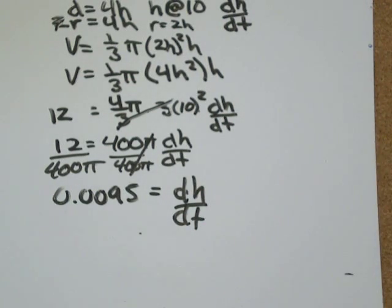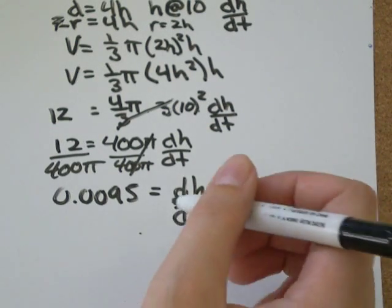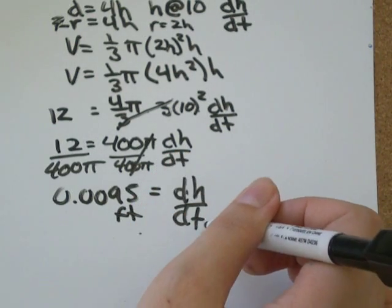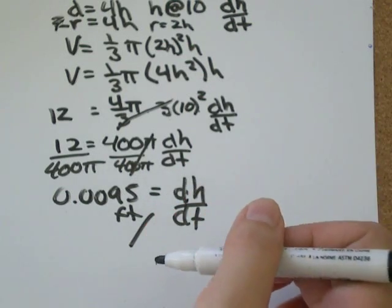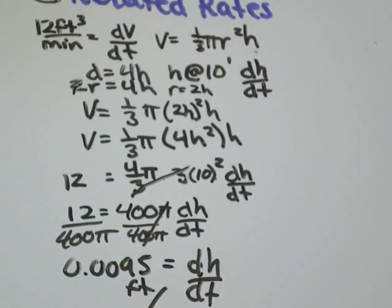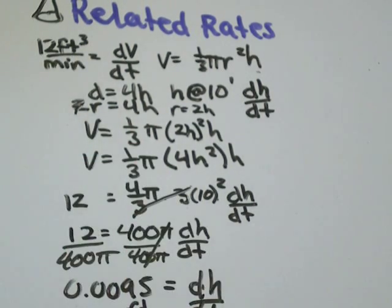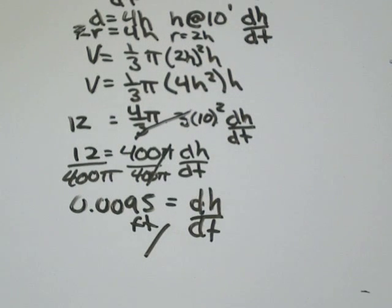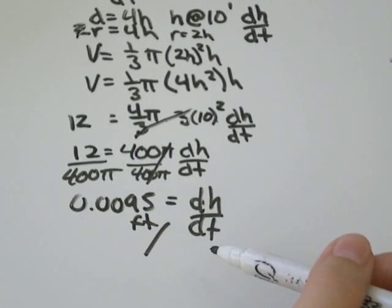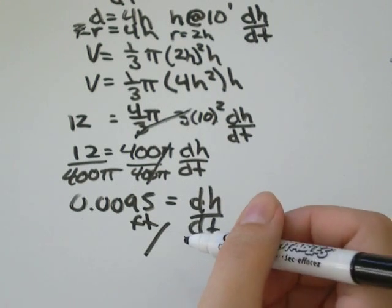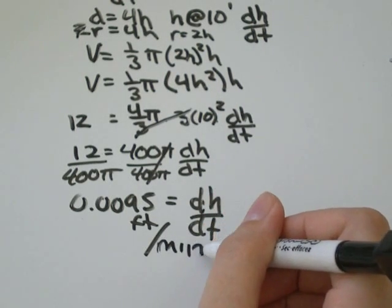Let's just think about our units for a second. Height was in terms of feet. And time was in terms of minutes. We knew that from the information the question gave us with volume in terms of time was feet per minute. So our official answer will be that dh dt equals 0.0095 feet per minute.